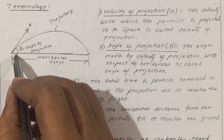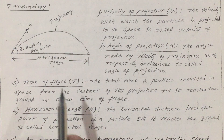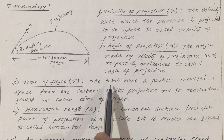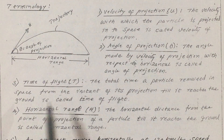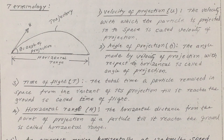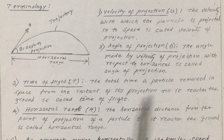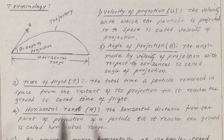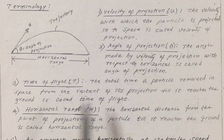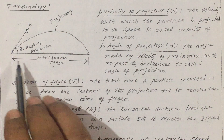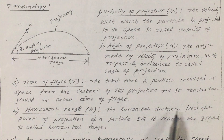Time of flight — the total time a particle remained in space from the instant of its projection till it reaches the ground is called time of flight. Horizontal range — the horizontal distance from the point of projection of a particle till it reaches the ground.